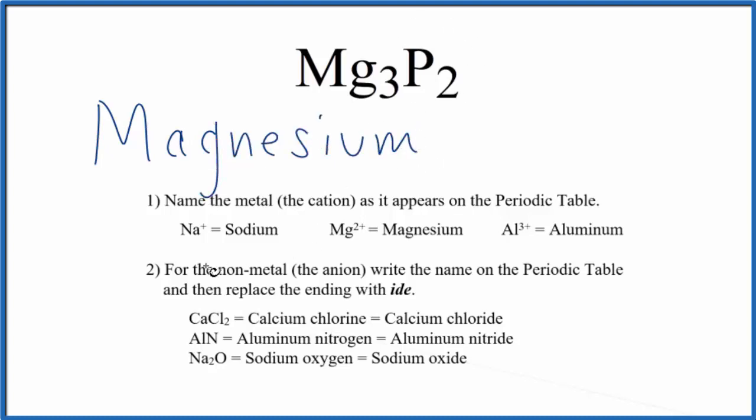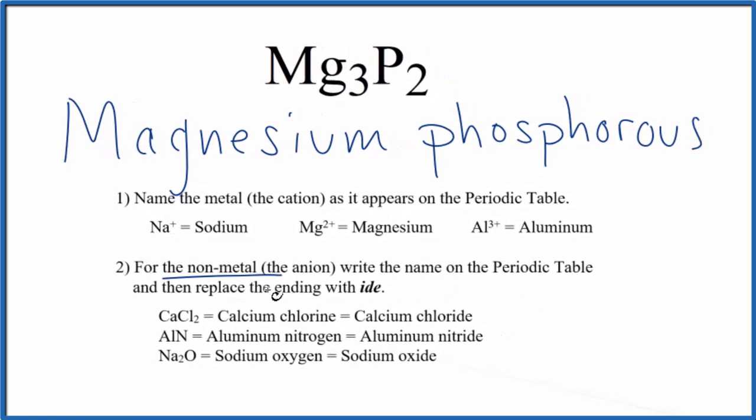And then for the phosphorus, we name the non-metal, that's the P, as it's on the periodic table. But we replace the ending with I-D-E. So all of this becomes I-D-E.